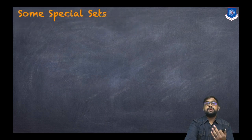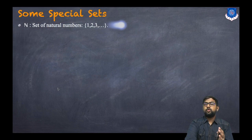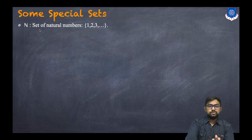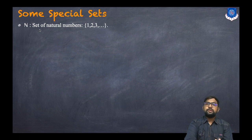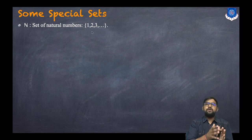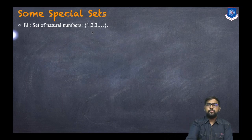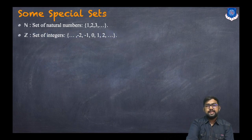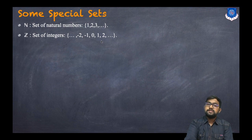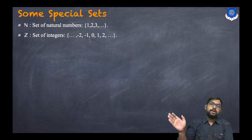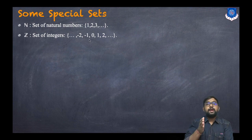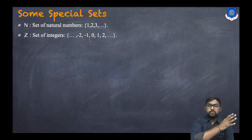Now let's discuss some special sets. N is the set of natural numbers and contains the elements 1, 2, 3, and so on. Z is the set of integers and contains …, -2, -1, 0, 1, 2, … and so on.